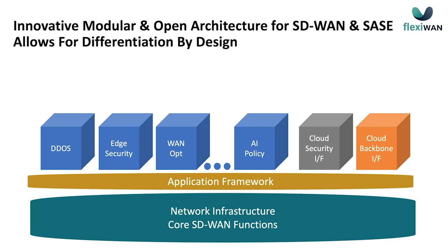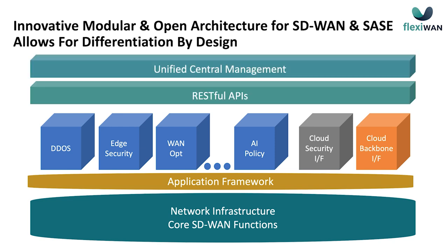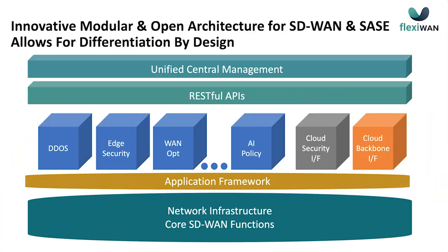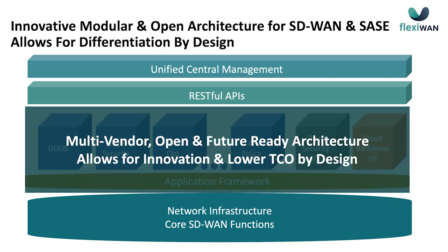This is what allows you to really add functionality to the system. On top of that, we have REST APIs and our UI — the Unified Central Management System — which uses the same APIs we expose to our customers. So anything done in the UI can also be done through the APIs, which allows you to do integration, build automation, and more. Altogether, this gives you a multi-vendor and open system that is future-ready, and allows you to add innovation — all at a lower total cost of ownership.